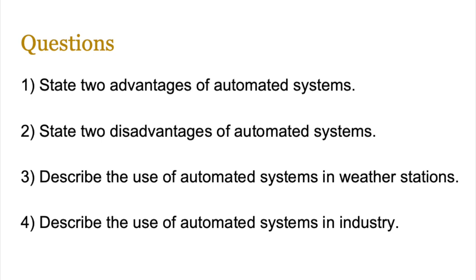By now you should have a good understanding of how automated systems work and should be able to answer the following questions. You should be able to state two advantages and two disadvantages of automated systems. You should also be able to describe the use of automated systems in weather stations, industry, simulations, or any scenario the exam throws your way, because the process is similar — all you need to do is tie it into the scenario. You should know different types of sensors and actuators and merge them in your answer. This is normally a four to six, possibly seven, mark answer and you should be able to claim all the marks with ease.